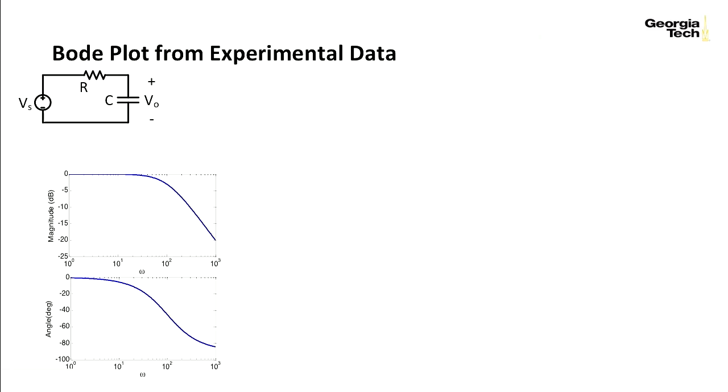We can also find the Bode plot from experimental data. The key is to remember how the transfer function relates the input and output magnitudes. So the amplitude of the output signal divided by the amplitude of the input signal is the magnitude of the transfer function at that frequency. And similarly, the phase angle is defined as the difference between the input waveform and the output waveform.